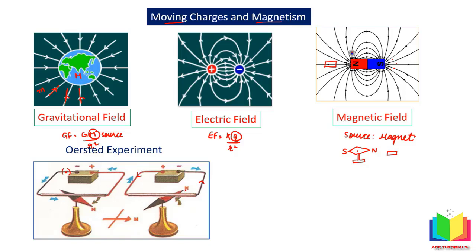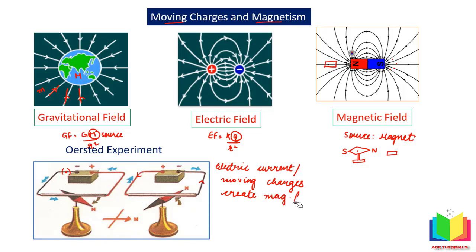Oersted got interested because we know that a compass needle moves only when there is a magnet or a magnetic field. Therefore, we can say that the electric current is applying force on this needle. Oersted was creating current and the needle was moving, so he gave the very important conclusion that electric current or moving charges create a magnetic field. Although Oersted did not further work on magnetism, it goes to his credit that he related electricity and magnetism.